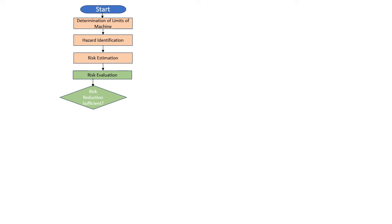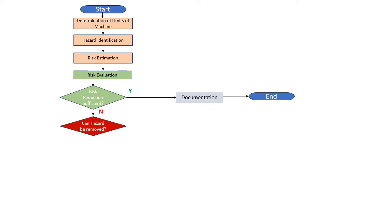After risk evaluation and determining how much risk reduction we need to do, we ask: is this risk reduction sufficient? If yes, document it — that is the end of the process. But if the risk reduction is not sufficient, we go to the next step: can the hazard be removed? Because eliminating the risk is the first priority. For more on risk reduction methodologies and fundamentals, there is a separate video on risk reduction fundamentals.